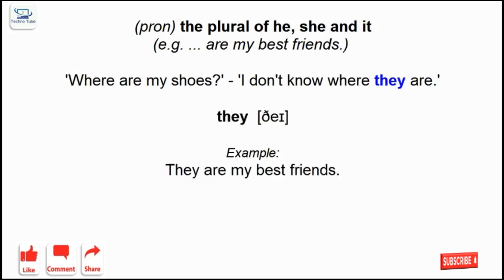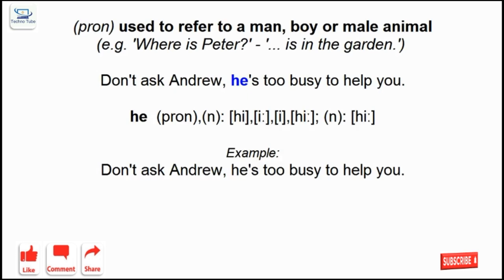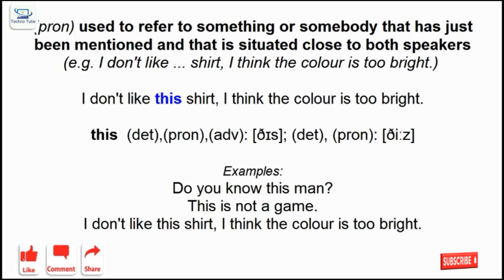They: the plural of he, she and it. He: used to refer to a man, boy or male animal. This: used to refer to something or somebody that has just been mentioned and that is situated close to both speakers.